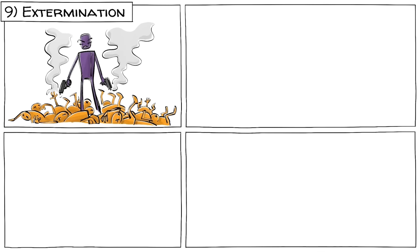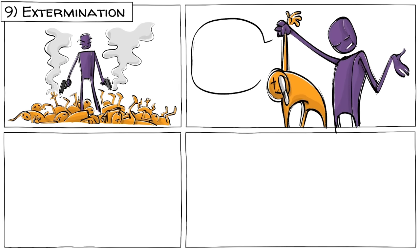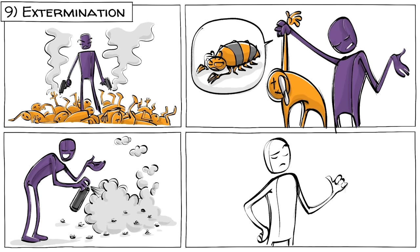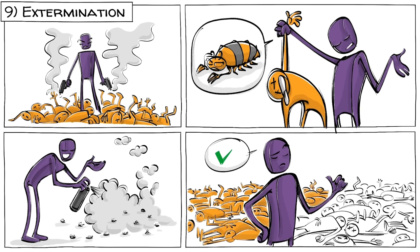Ninth is extermination. The mass killing begins. The culprits view their victims as less than human, believing they are cleansing the world of an undesirable element, and in doing so justify the use of disproportionate violence.